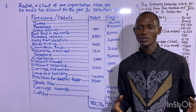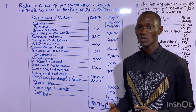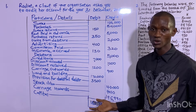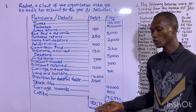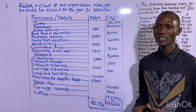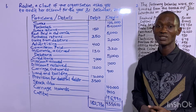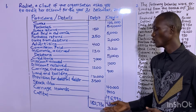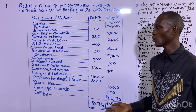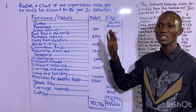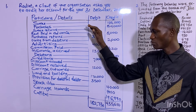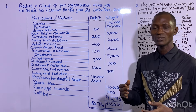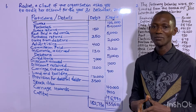Roddiard happens to be a business owner. The bookkeeper of Roddiard has prepared a trial balance which failed to agree — the two sides don't agree. We established that when the trial balance is extracted, the two sides are expected to be equal, but here they are not. That means the bookkeeper lacks the basic understanding of the golden rule of trial balance.